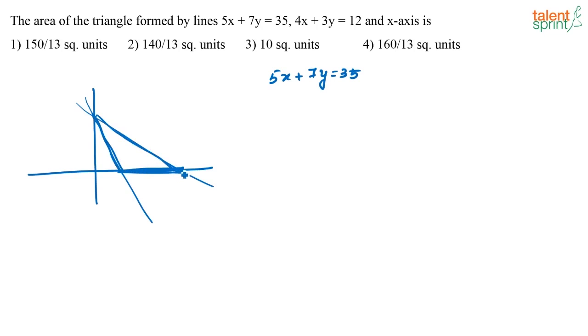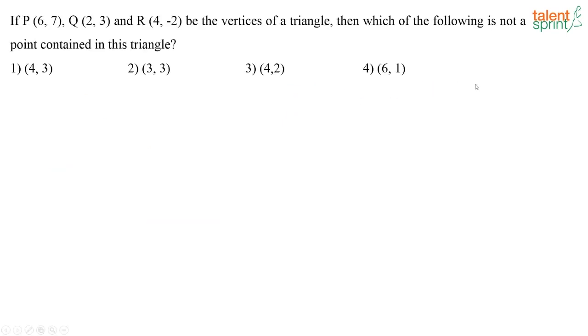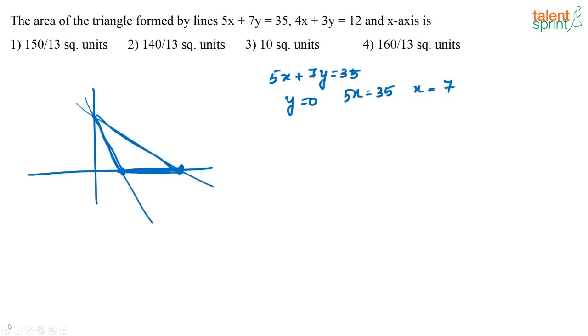First I am going to find out these two points where these two lines are going to pass the x-axis. My first line is 5x plus 7y is equal to 35. So if I put y is equal to 0, what will I get? 5x is equal to 35 or x is equal to 7. When y is equal to 0, x is equal to 7.